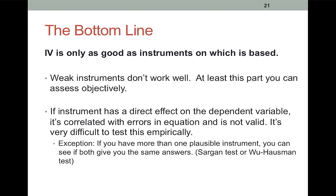So the bottom line is that IV estimates are only as good as the instruments that are used, and there are many ways in which these instruments can be lousy. Weak instruments don't work well, but at least you can assess this just by looking at the results of your first stage. If an instrument has a direct effect on the dependent variable, one that doesn't go through the endogenous variable or the other variables in your regression, then your instrument's not valid. This is a very hard thing to test. The one exception is that when you have more than one plausible instrument, you can do something called a Sargan or a Wu-Hausman test. And the intuition behind these tests is that if you use your instruments individually, they should give you very similar answers if they're both good instruments. If you get different answers, then something's wrong with one of them. Unfortunately, it's often pretty hard to find even just one plausible instrument.